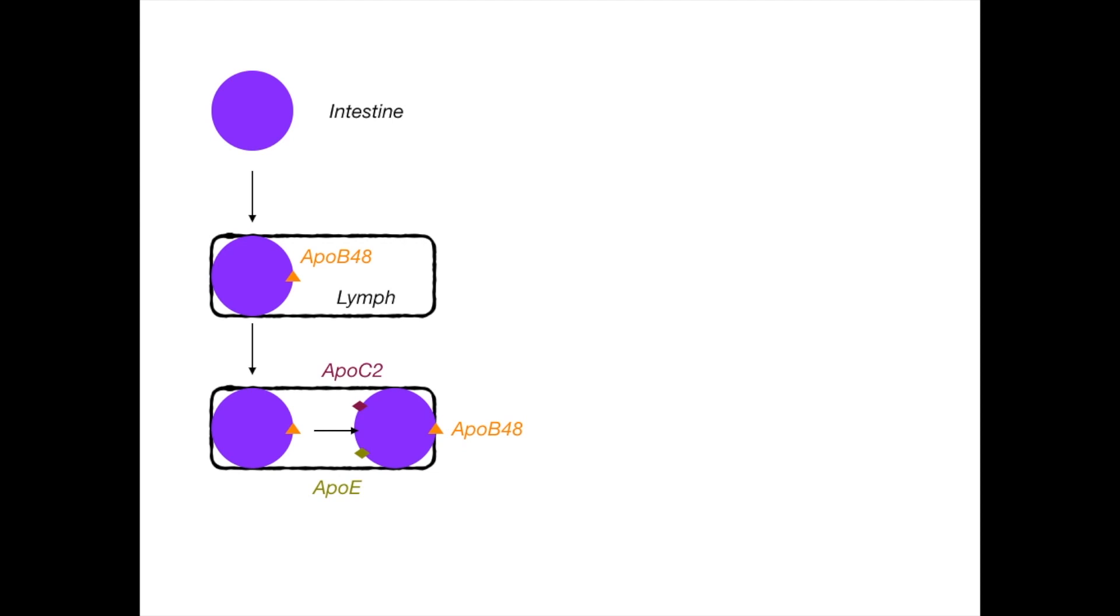Okay. So here's where we are. Our purple chylomicron has three apolipoproteins on it. It's got APO B48, which came from the GI system and helped the chylomicron reach the lymphatic system. And then it was donated APOE and APOC2 from HDL.